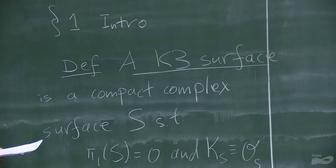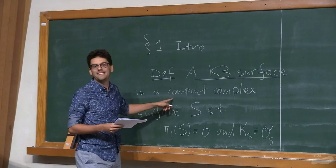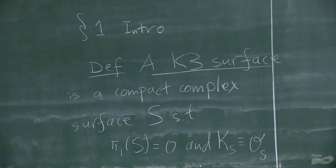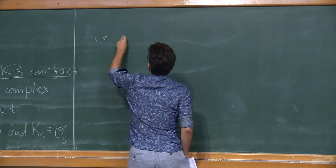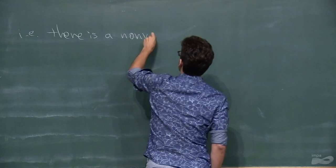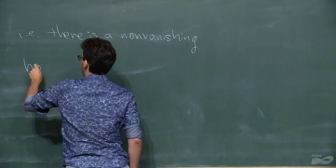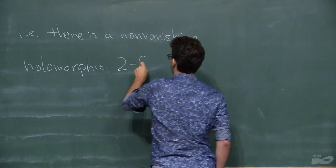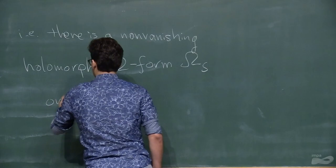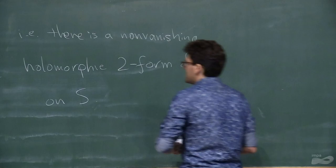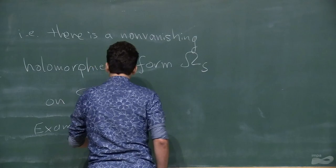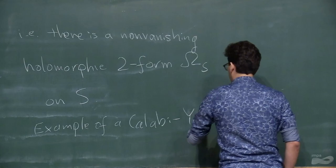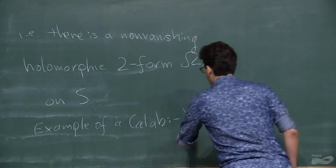When I say complex surface, I mean a 4-manifold. What does it mean that the canonical bundle is trivial? It just means that there is a non-vanishing holomorphic 2-form — let me call it ω_S on S. This is an example of a Calabi-Yau, which is an important class of algebraic varieties — the ones that have a non-vanishing holomorphic top form.